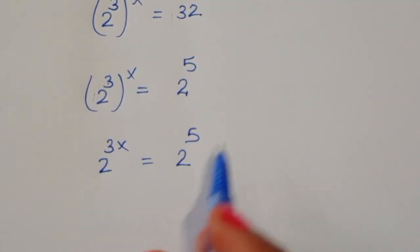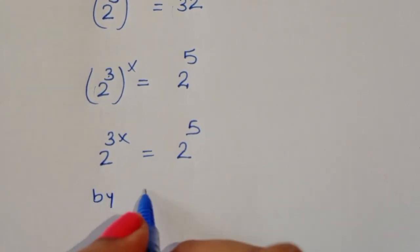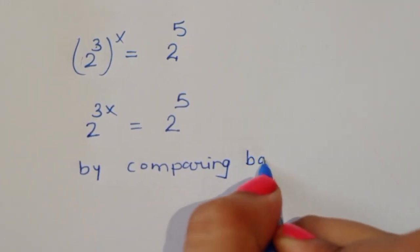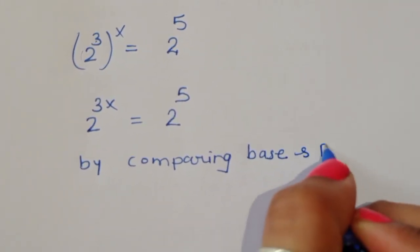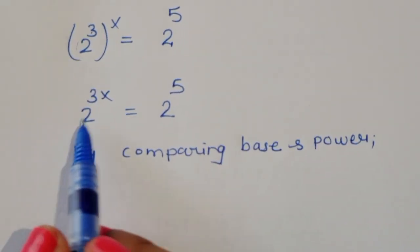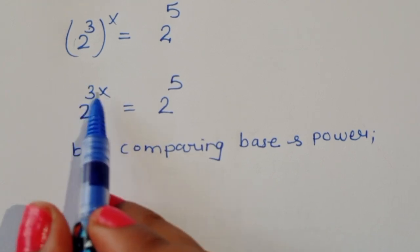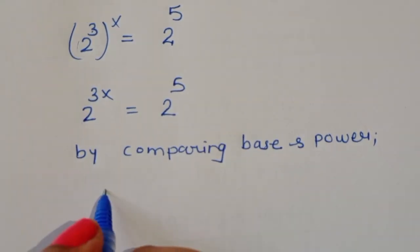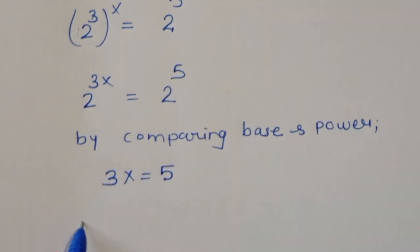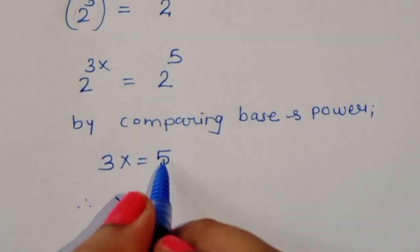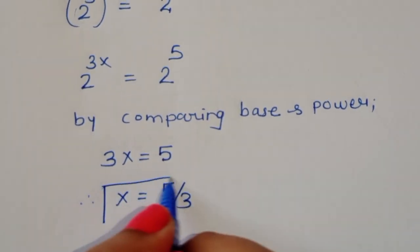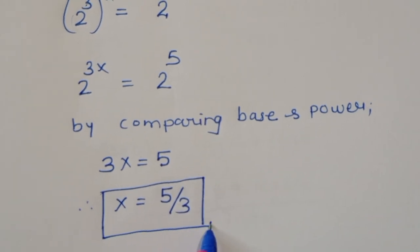Comparing the bases and exponents on both sides — since the bases are equal (both are 2) — the exponents must be equal. So 3x equals 5, and therefore x equals 5 by 3.